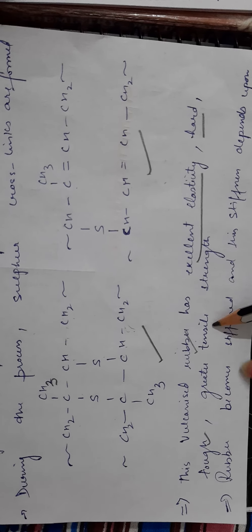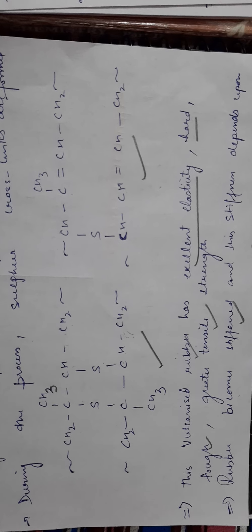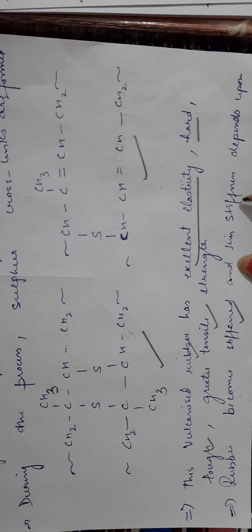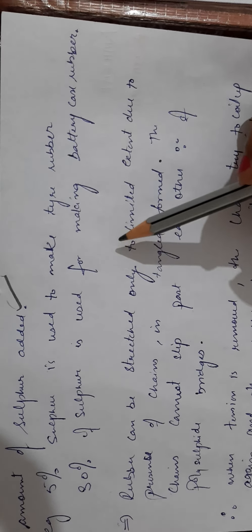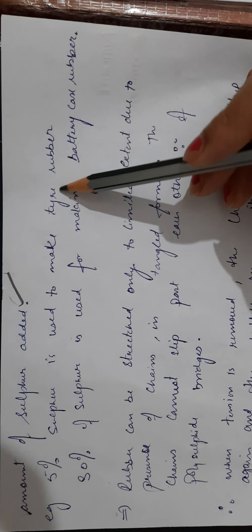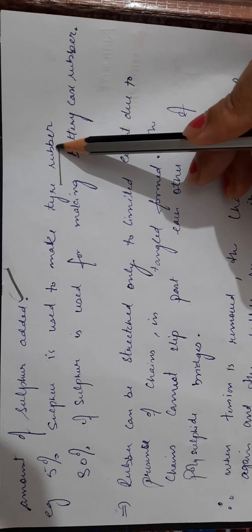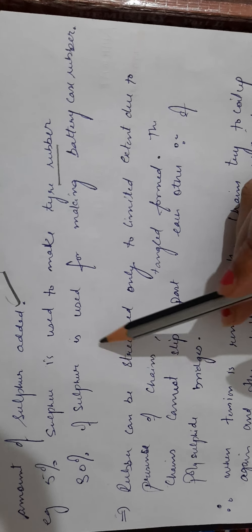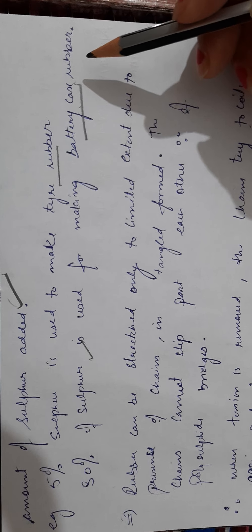After vulcanization, vulcanized rubber has greater elasticity than natural rubber — it is hard and tough, with higher tensile strength. It is also stiffer. The stiffness depends on how much sulfur is added. For example, adding 5% sulfur in natural rubber produces rubber used in tires.